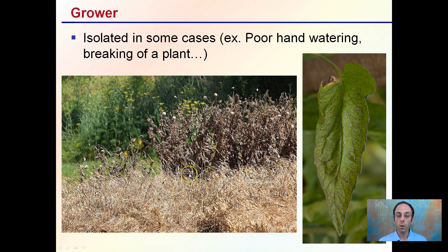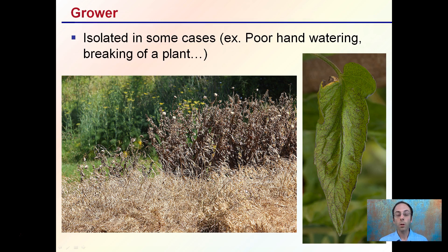Lastly, we have a grower issue, and this usually occurs in isolated cases. It could be poor hand watering or inconsistency with watering, breaking the plant through mishandling, spraying improperly causing spray damage, or applicator blight would be one example. Here we see an herbicide spray. So these are ways that we want to go about approaching when we're diagnosing an issue with our plants.